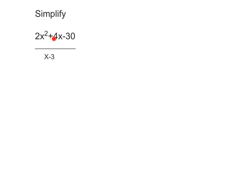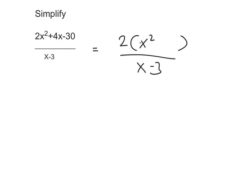Let's see if we can factorize this. The first thing to note is that there is something in common amongst all the terms, so we can do highest common factor on this first. If we take 2 out as the common factor — because 2 goes into all of these — we get 2 times (x² + 2x - 15), dividing 2 into 2x² to get x², into +4x to get +2x, and into -30 to get -15.